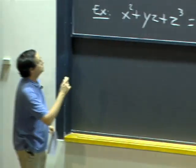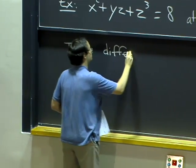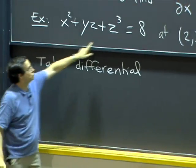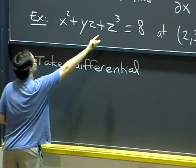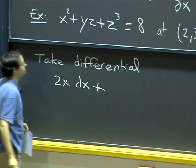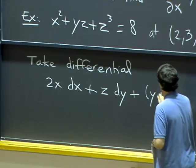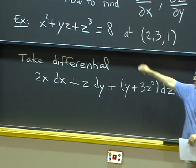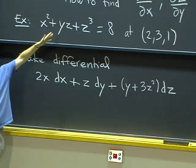How can we do it? Let's look at the differential of this constraint quantity. If we call this g, let's look at dg. The differential of x squared is 2x dx, plus there is a z dy, there is a y dz, and there is also a 3z squared dz. You can get this either by implicit differentiation and the product rule, or by putting here the partial derivatives of this with respect to x, y, and z.